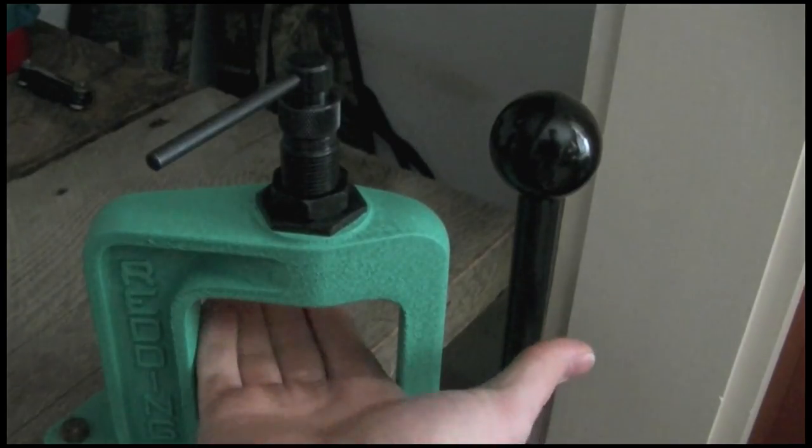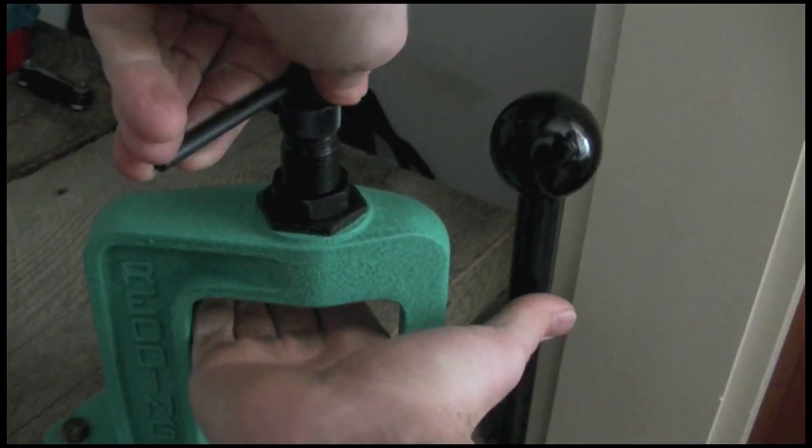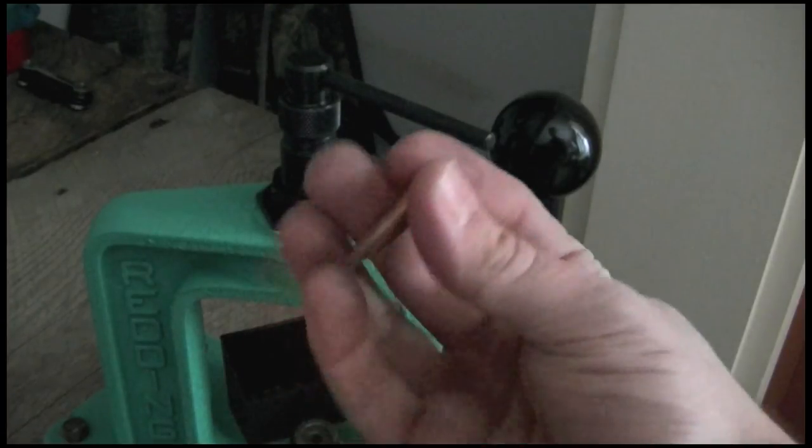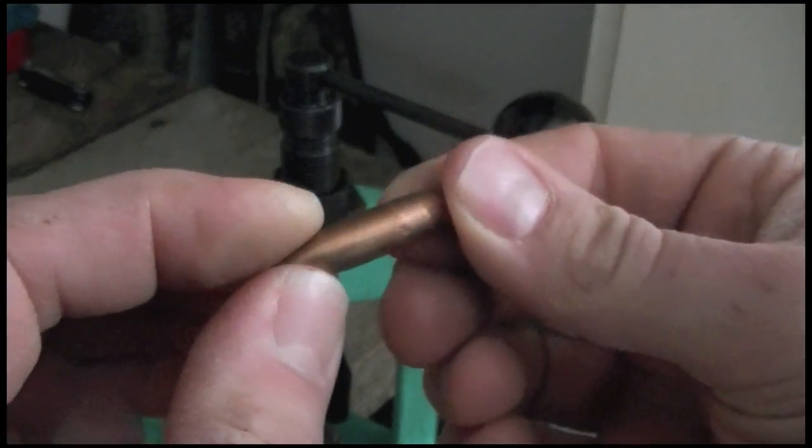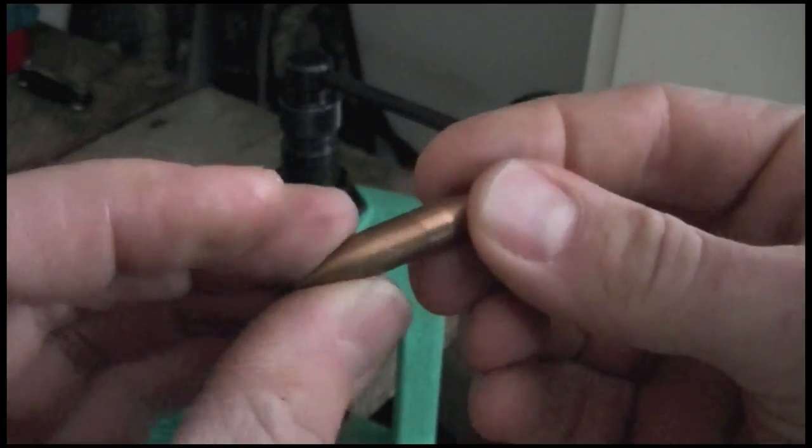Turn the collar back. Half a turn. And out will come your bullet. Your bullet should be perfect. Any marks you'll see will be basically a difference in the tarnish. Where the brass was actually touching the bullet.